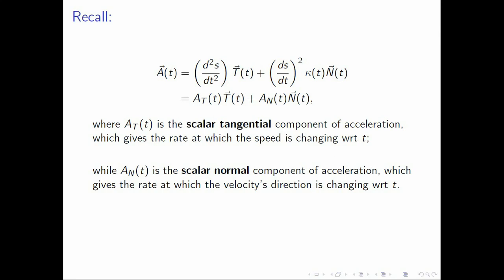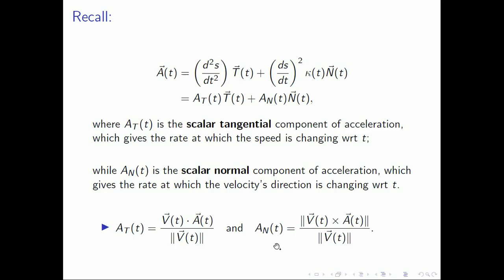We have also seen that a sub t of t can be obtained using this formula: a sub t of t is the dot product of v of t and a of t, all over the magnitude of v of t. And a sub n of t is the magnitude of the cross product of v of t and a of t, all over the magnitude of v of t. We have now recalled all the formulas that we need and may proceed to our examples.